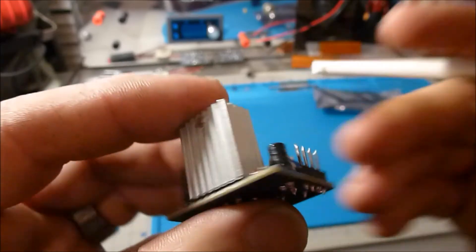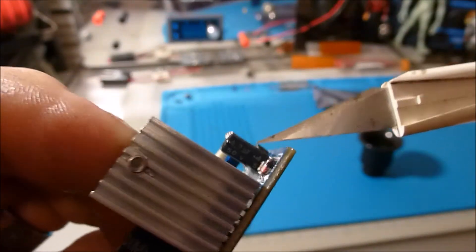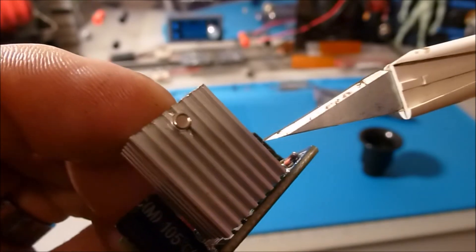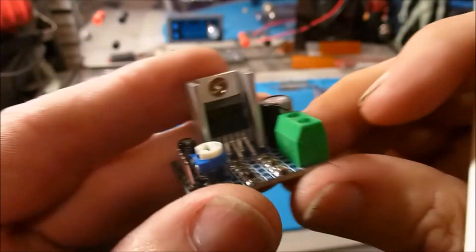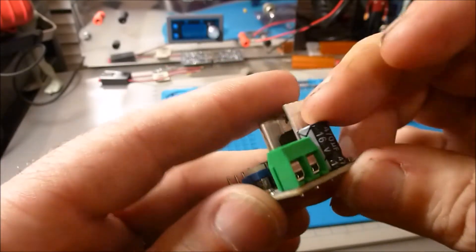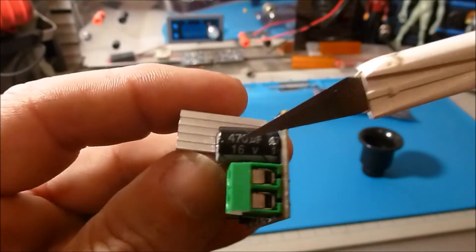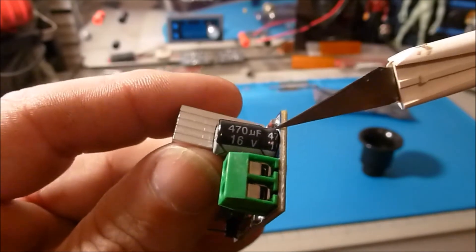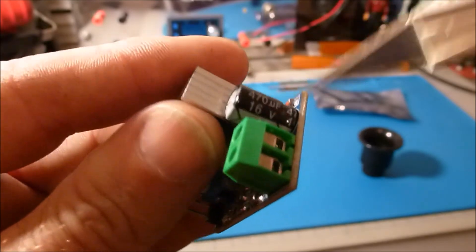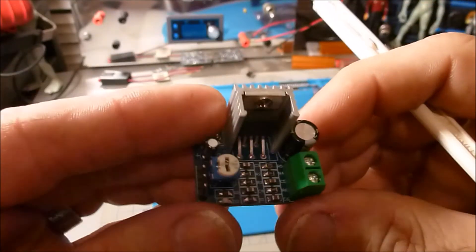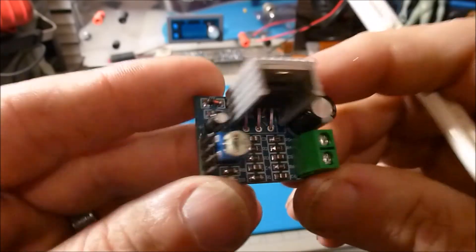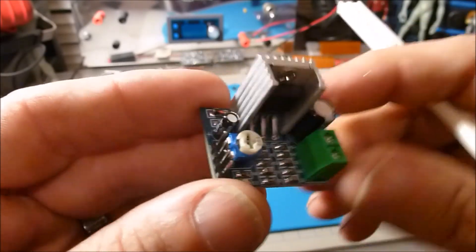But the seller put out schematics for it and everything, and this doesn't even match what they put out. Right here you can see 4.7 microfarad at 50 volts for a smoothing capacitor, and on the schematics it was 100 microfarads. Then on the output side they got a 470, and on the schematics I think it was 2200 microfarad.